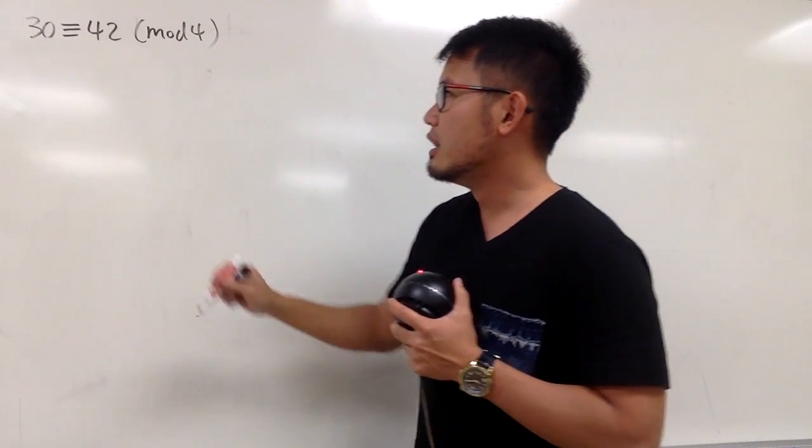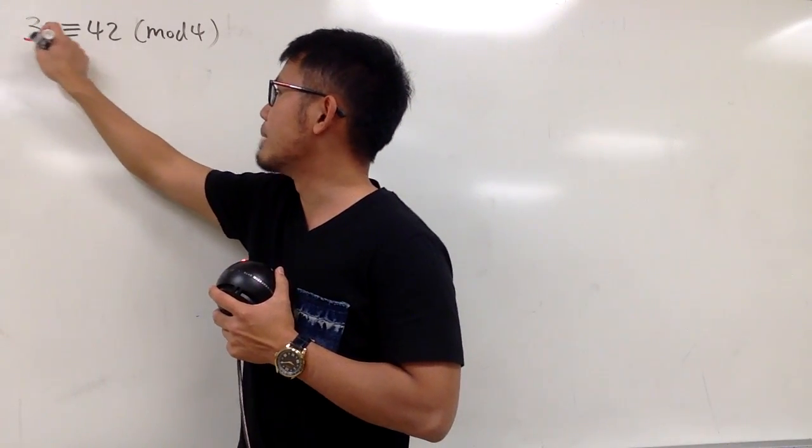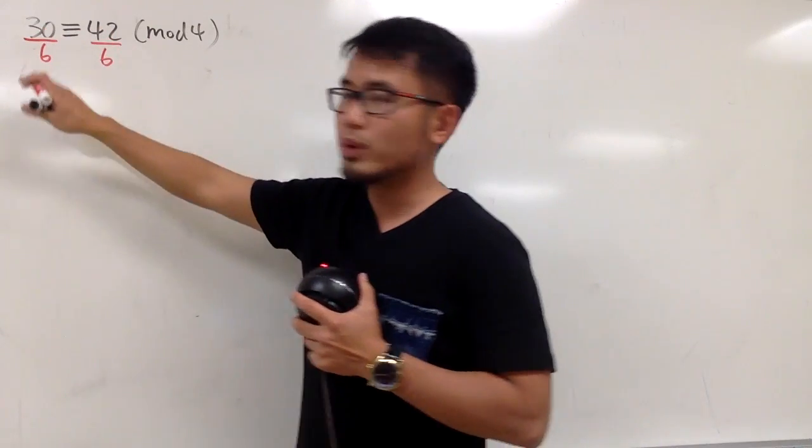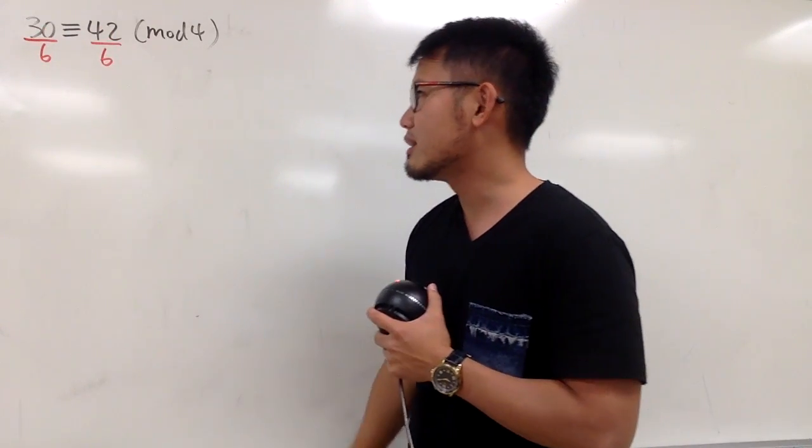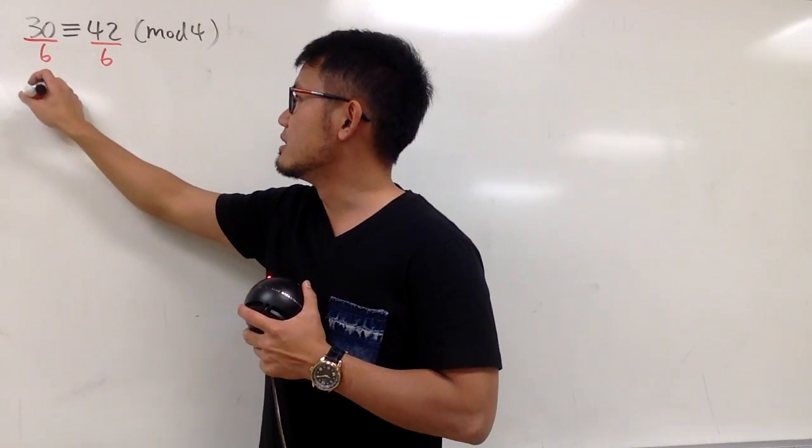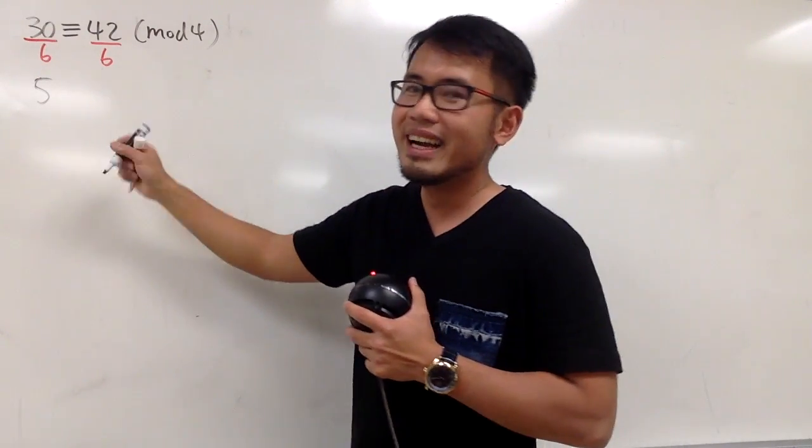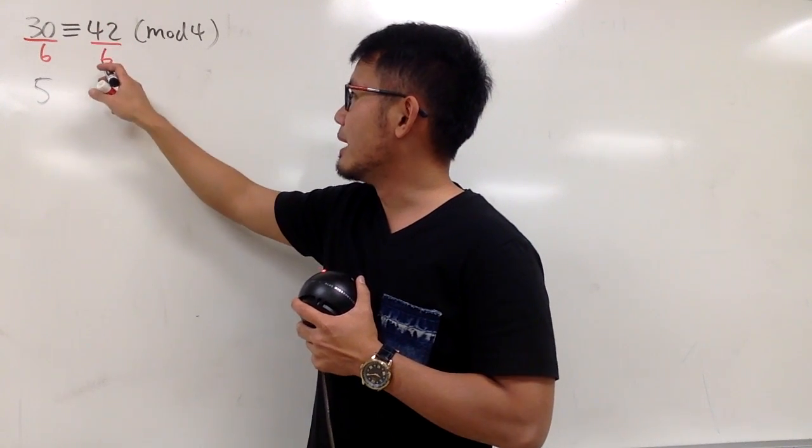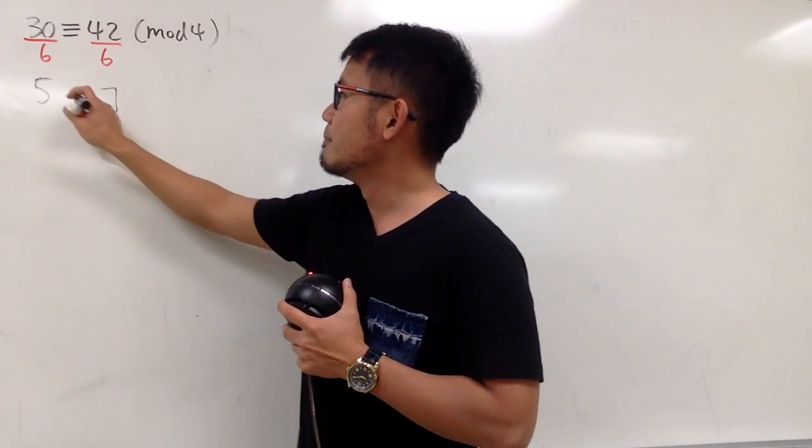And now, let me just try to divide both sides by, let's say, 6, and be sure we still get whole numbers in the end. Here, 30 divided by 6 is just 5, of course. And 42 divided by 6 is just 7.